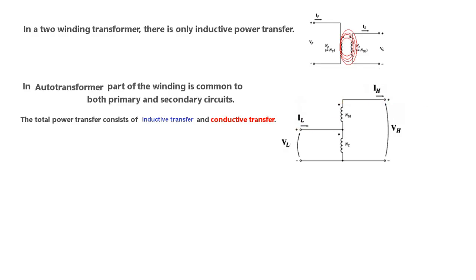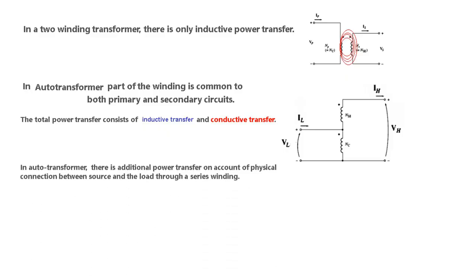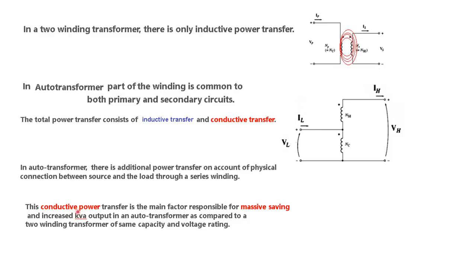In an auto transformer there is additional power transfer due to the physical connection between source and load. This connection ensures additional power is transferred through the series winding. This conductive power transfer — power going directly to the load — is the main factor responsible for the massive saving and increased KVA output of the auto transformer as compared to the two-winding transformer.